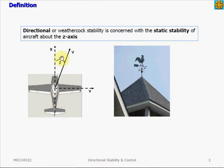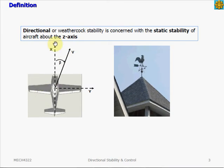The angle between the aircraft centerline and the relative wind is called the side slip angle beta. If the aircraft is in equilibrium or in trim condition in yaw, it means the side slip angle is zero and the yawing moment is zero. Whenever we have a yawing disturbance — meaning we have a certain side slip angle — we want to reduce this side slip angle back to zero by pointing the aircraft nose toward the direction of the relative wind.